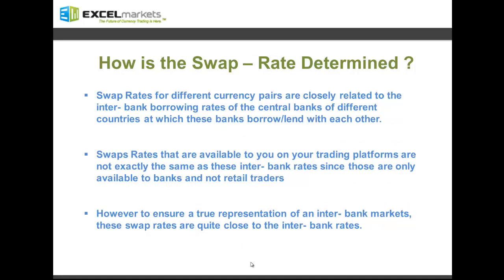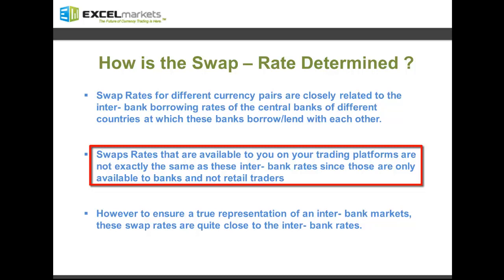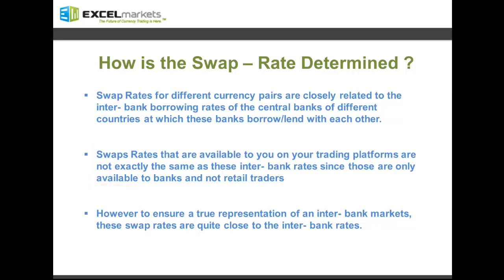Moving on to how the swap rate is determined. Swap rates for different currency pairs are closely related to the interbank borrowing rates of the central banks of different countries, at which these banks borrow or lend with one another. The different swap rates applicable to different currency pairs, depending upon the long or short position held, are available on your trading platforms. Please note that these swap rates are not exactly the same as the interbank rates — those interbank rates are slightly better as compared to the swap rates that you see on your platform.